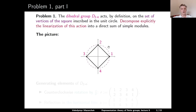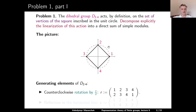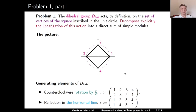Let us think how we can encode the elements of our dihedral group. The dihedral group is generated, for example, by the following two elements. The first one is the counterclockwise rotation by 90 degrees. This rotation sends vertex 1 to vertex 2, vertex 2 to vertex 3, vertex 3 to vertex 4, and vertex 4 to vertex 1. The second element is the reflection in the horizontal line. Such a reflection stabilizes vertices 1 and 3 and swaps vertices 2 and 4, corresponding to the permutation: 1→1, 2→4, 3→3, 4→2.